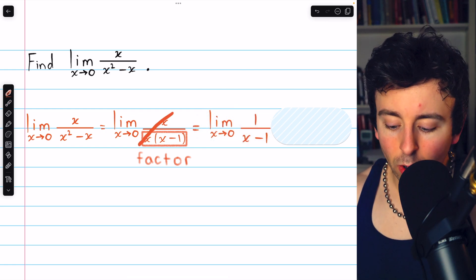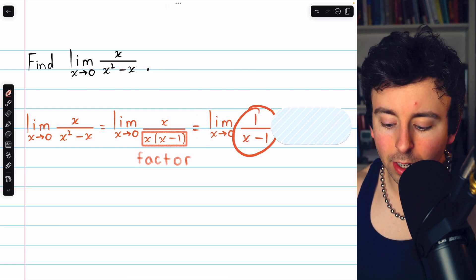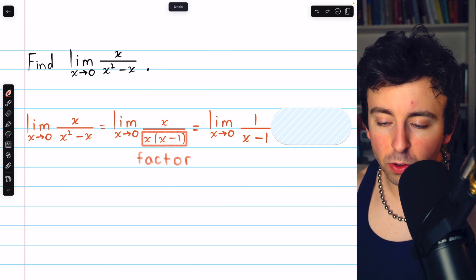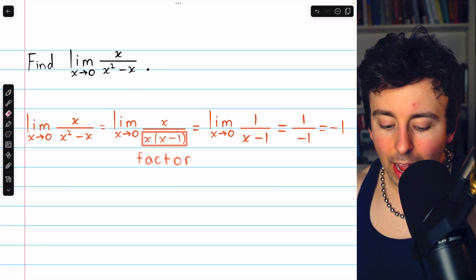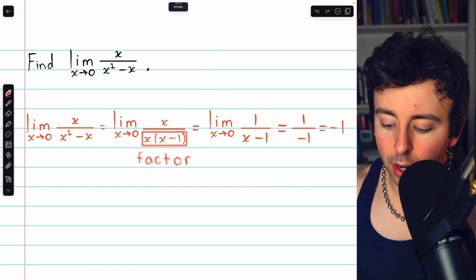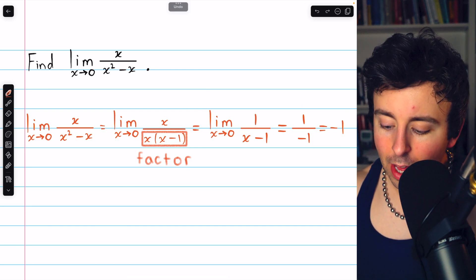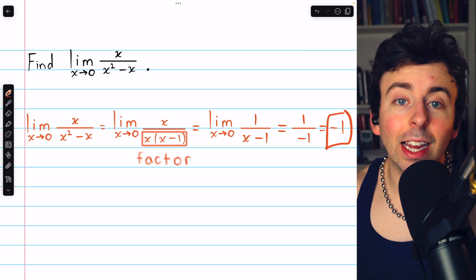After canceling out the x's, we just have 1 over x minus 1. Still x is approaching 0, but now we can plug x equals 0 in, and we get 1 over 0 minus 1. So 1 over negative 1, thus the limit is negative 1.